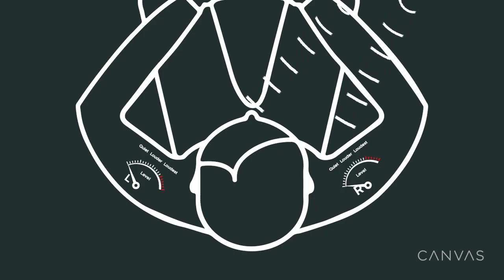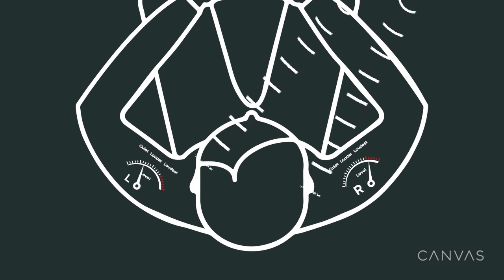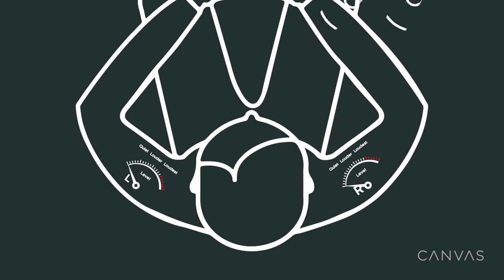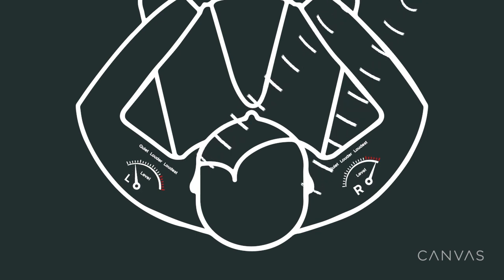The second kind of cue is the sound as it travels from the source: when it hits your right ear it has a certain level, but by the time it hits your left ear it has a lower level.